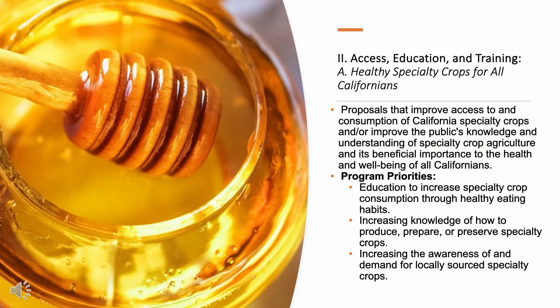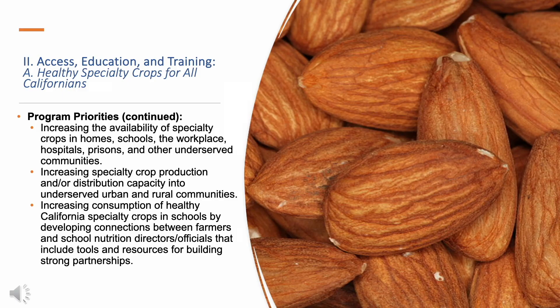The next funding area is access, education, and training. This funding area has two categories. Funding Category A is called Healthy Specialty Crops for All Californians. Proposals submitted in this category should improve access to and consumption of specialty crops in underserved communities and/or improve the public's knowledge and understanding of specialty crop agriculture and its importance to the health and well-being of all Californians. There are six program priorities in this category — please review the RFCP to read them in detail.